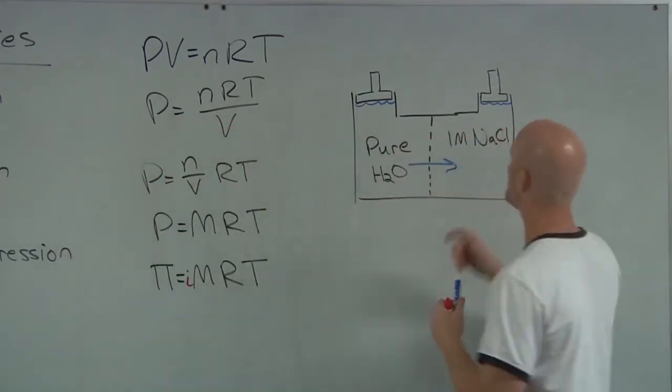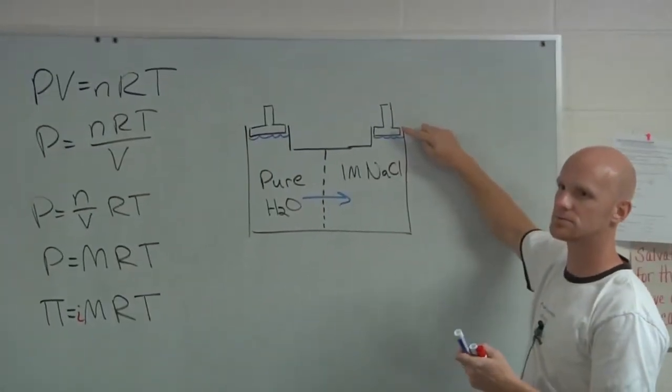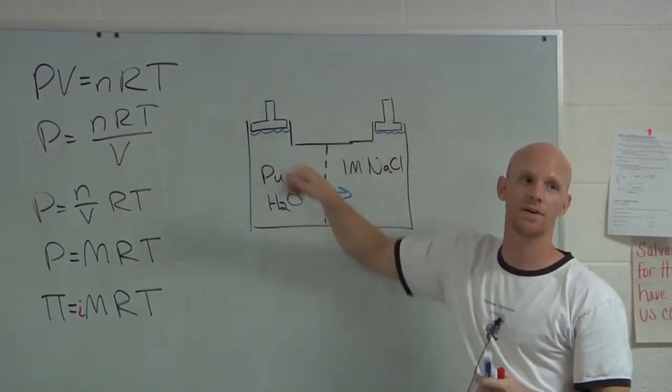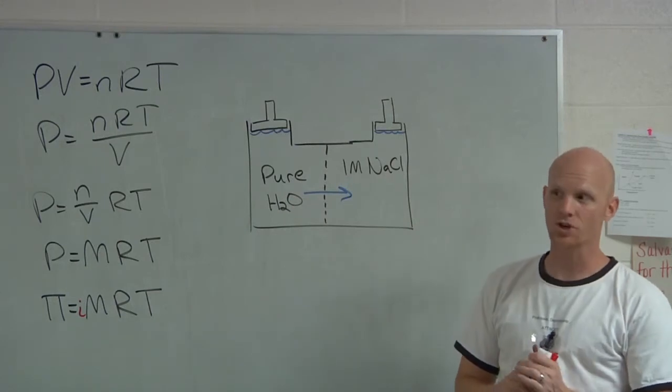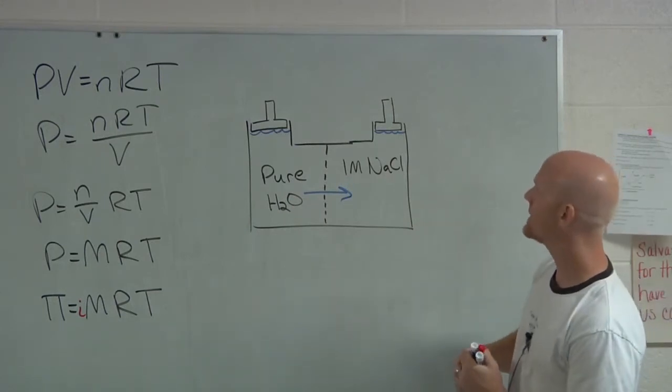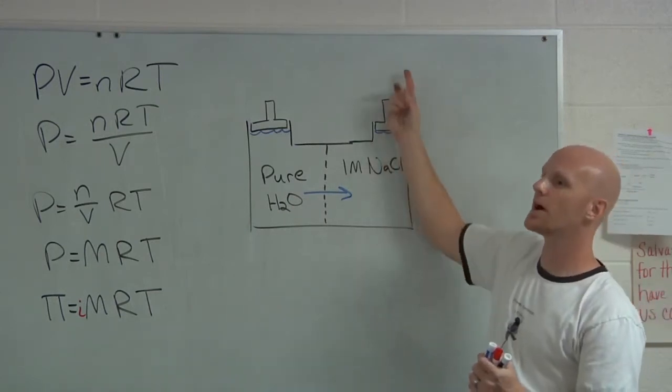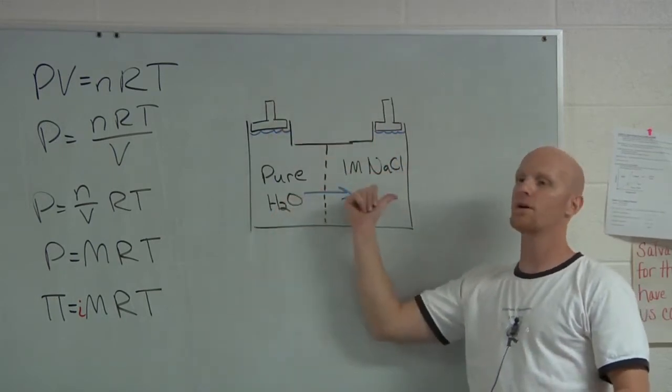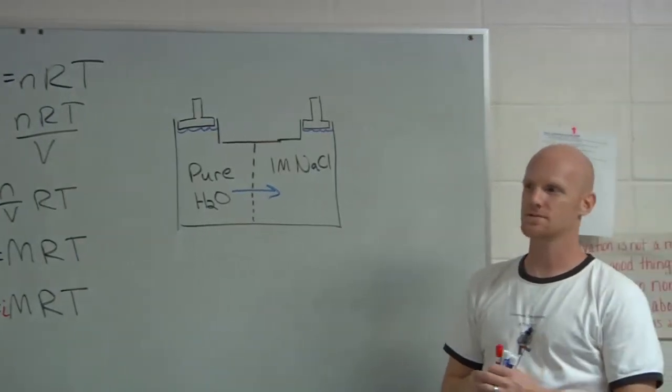As a result, where will this piston want to go? It's going to want to go up. And where's this piston want to go? Down. The amount of pressure we would have to apply to keep this one from going up and to keep this one from going down would equal the osmotic pressure. So that's what it is.